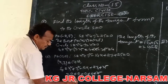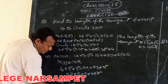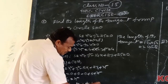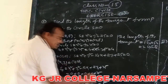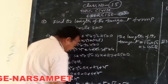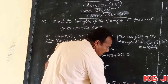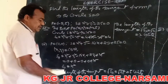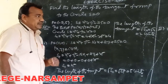Here S₁₁ = 25. The length of the tangent drawn from the origin to the circle is given by the formula root S₁₁. S₁₁ = 25, so root 25 = 5 units. That is the length of the tangent drawn from the origin to the circle.